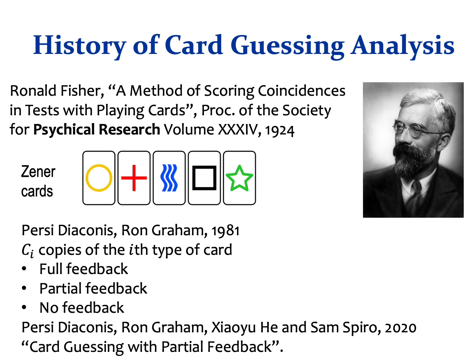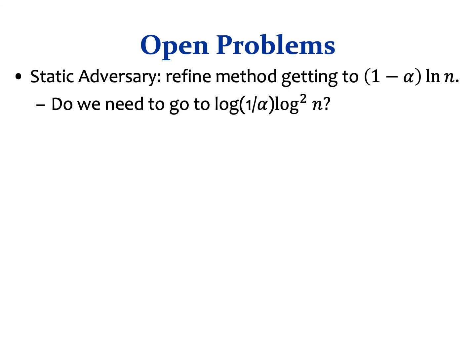The first paper we found on card guessing dates back to 1924, where Ronald Fisher suggested and analyzed a scoring system for card guessing to measure one's claim of having psychic abilities such as clairvoyance or telepathy. His paper can be found online in the proceedings of the Society for Psychical Research. In 1981, the Akones and Graham studied the game where there are multiple copies of each card and the guesser receives different kinds of feedback. There are also more recent papers about other variants of the game.